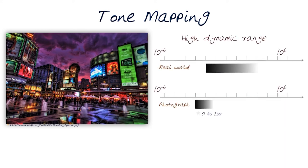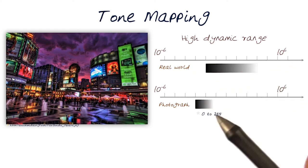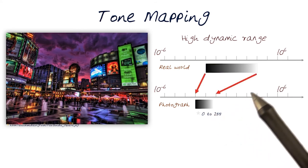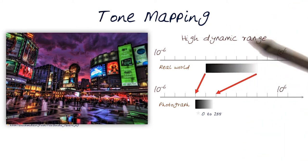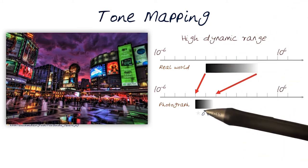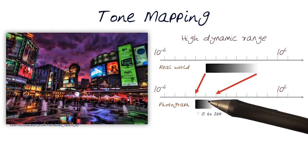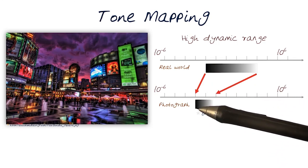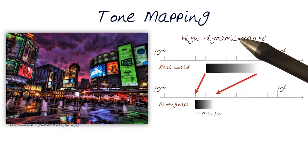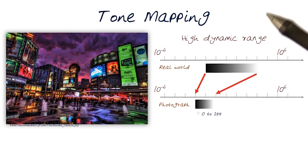What we're really doing with tone mapping for high dynamic range images is taking this whole dynamic range shown in the real world and squishing the whole range into 0 to 255. That's essentially what tone mapping does — it takes the whole range and, based on the display characteristics, compacts it into this range. Yes, you do lose information, but if you save the radiance map, you already have that information that you can use later.